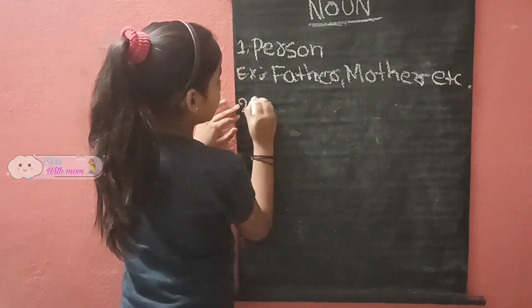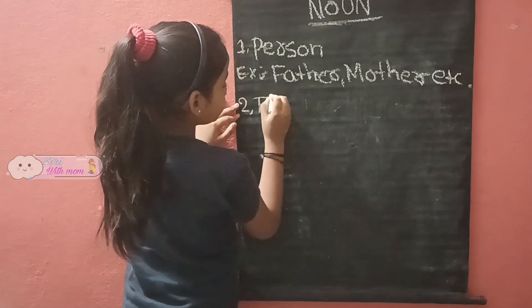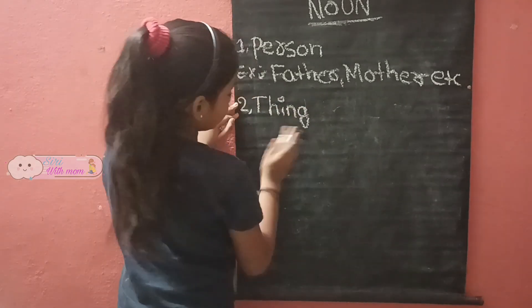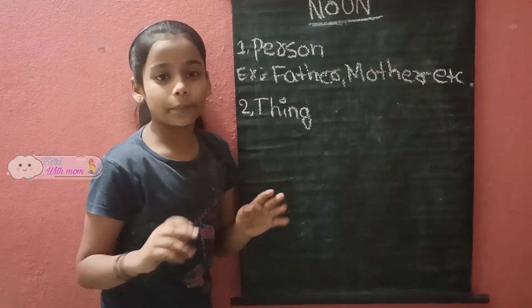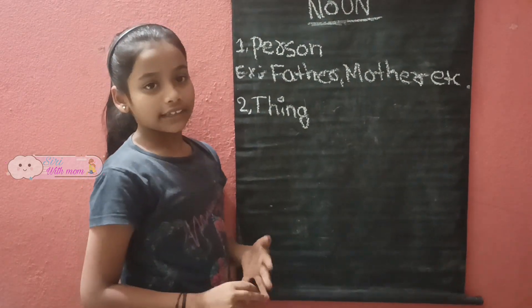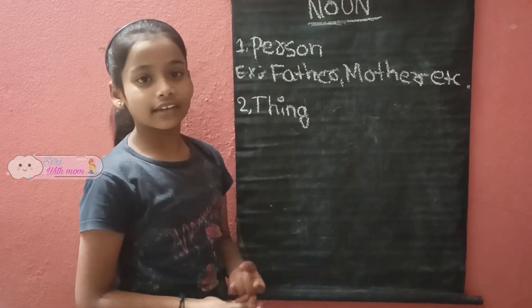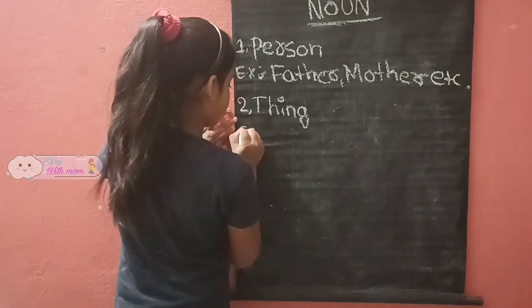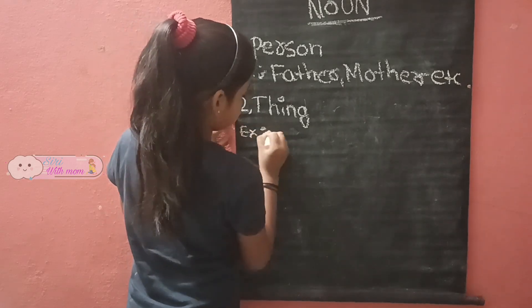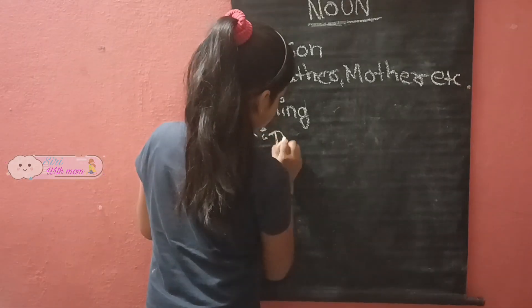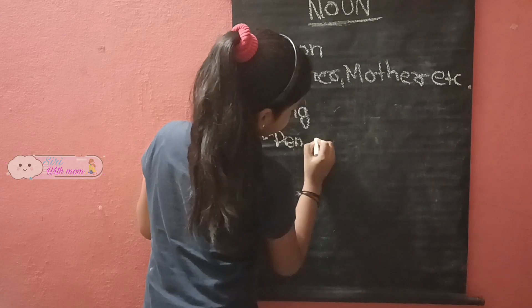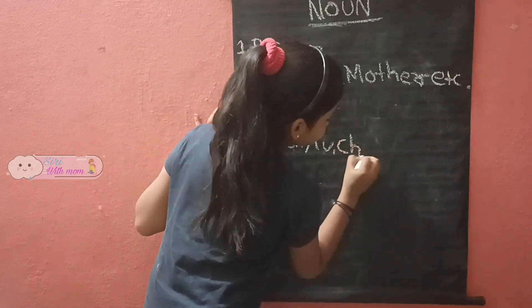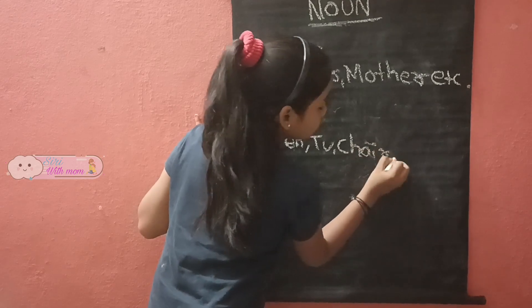Second one: thing. Thing means like pen, book, TV, chair — these top things. Example: pen, TV, chair, etc.